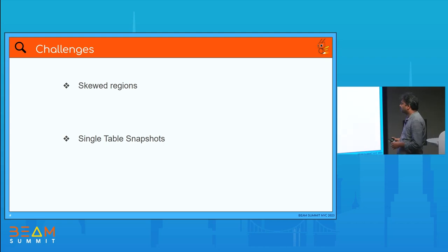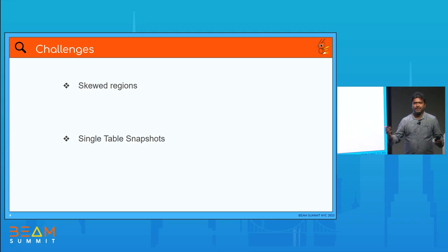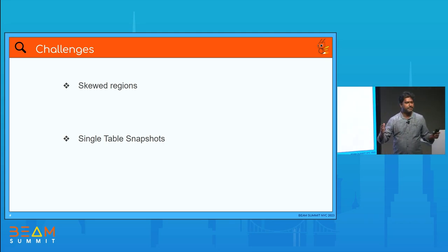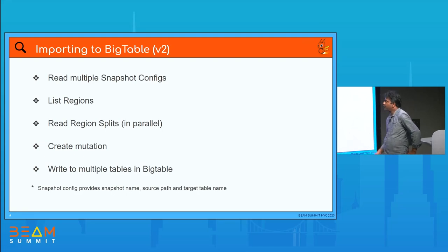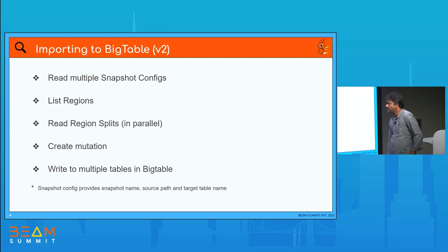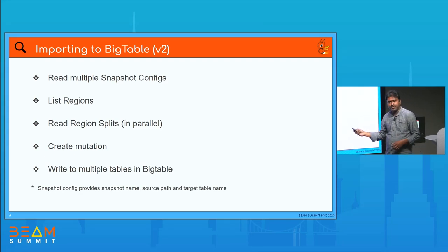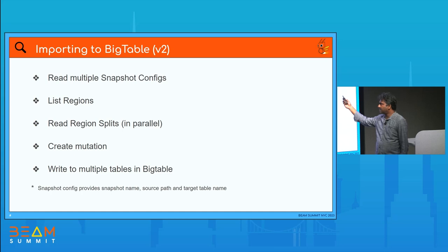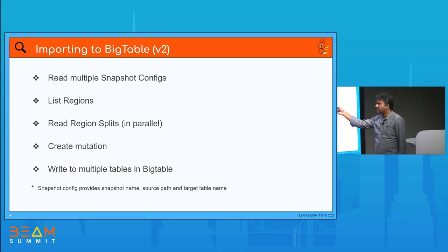So the challenge is: how do we deal with skewed regions to further parallelize our pipeline? The second challenge is that the initial pipeline version is a single-table snapshot — it works for only one table at a time. If you have 10 tables, you need to launch 10 instances of that pipeline. We tried to address both these problems in the second version. The second version reads multiple snapshot configs so you can process N tables at once, lists the regions, further splits regions whose size is above a certain threshold, and writes to multiple Bigtable tables.